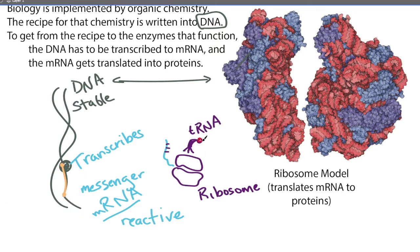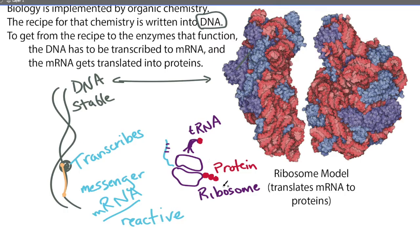The tRNA brings in the amino acid, matches it to the RNA, and adds that amino acid to the growing chain. So we get this protein that consists of the translated recipe, and it will actually start folding depending on the charge and the stiffness, and it will actually create an enzyme.